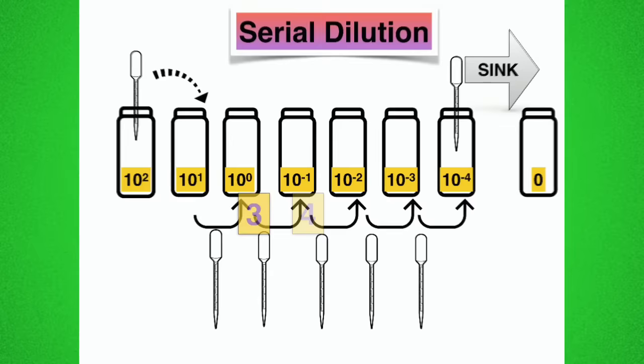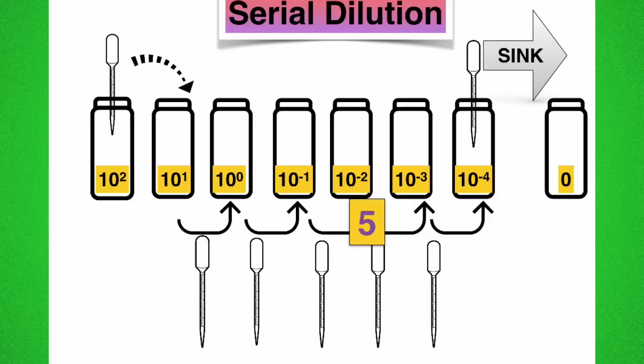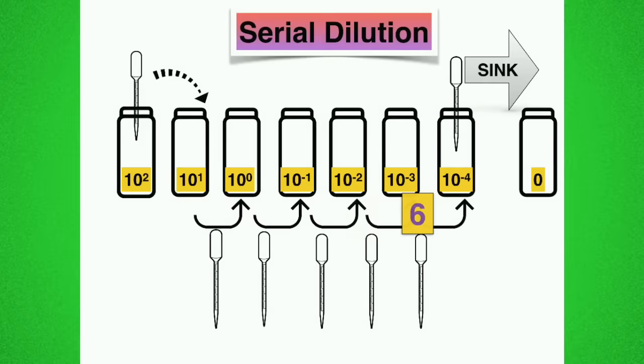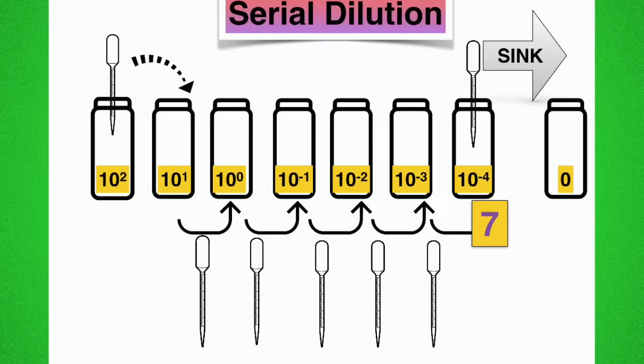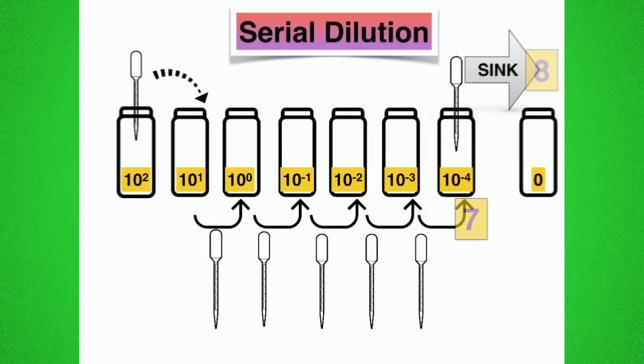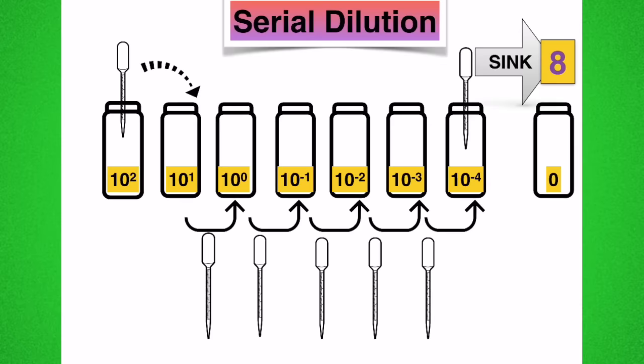After mixing we transferred one mil out of four using a new pipette into bottle number five. Then one mil out of five into six. One mil out of six into seven using a new pipette every time. And finally one mil out of seven. However, it goes in the sink and not into bottle number eight. This was really important because bottle number eight is your control. It should contain no IAA.